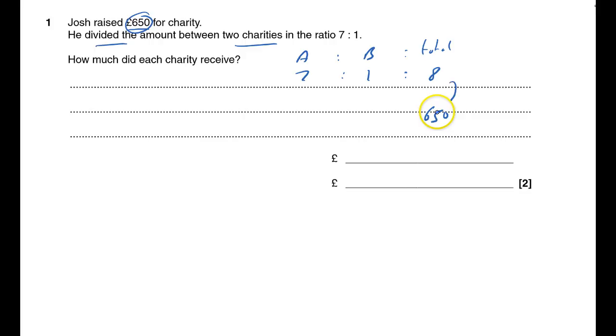So that'll be £650 there, and now all I have to do is work out what I have to go from 8 to 650, what I times by. In this case, I can't see it immediately, so I'm going to have to do 650 divided by 8.